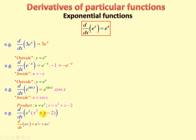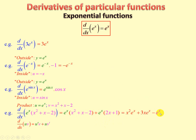Here's a product rule example. u equals e to the x, and v equals x squared plus x minus 2. The product rule gives u prime v plus u v prime. So we have the derivative of e to the x, which is e to the x, times the second function as it is, plus e to the x times the derivative of the second function, which is 2x plus 1. Simplifying, we end up with x squared e to the x plus 3x e to the x minus e to the x, since a couple of terms cancel.